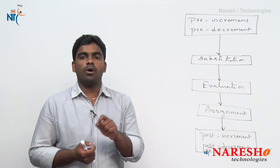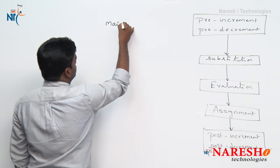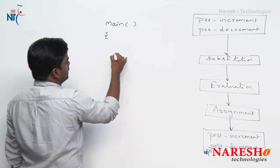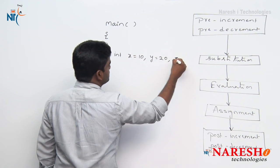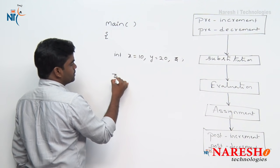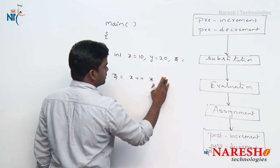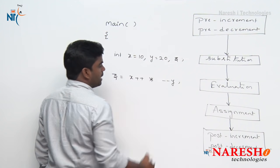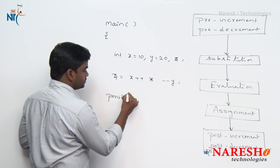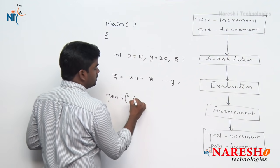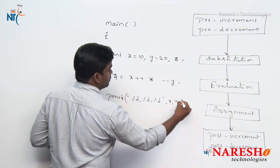Let's see exactly how modify operators execute. One example: in main, int, three variables — suppose x value is 10, y value is 20, and z. The expression is: z = x++ * --y * --y. And here we are printing all three variables x, y, z using printf.